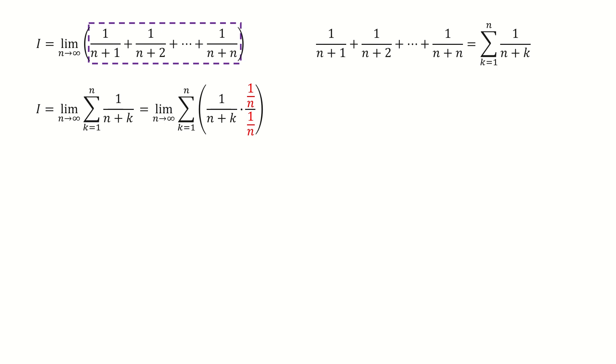And next, we divide n on both numerator and denominator. After dividing the factor n, the denominator goes to here. And then we put the numerator to the right.